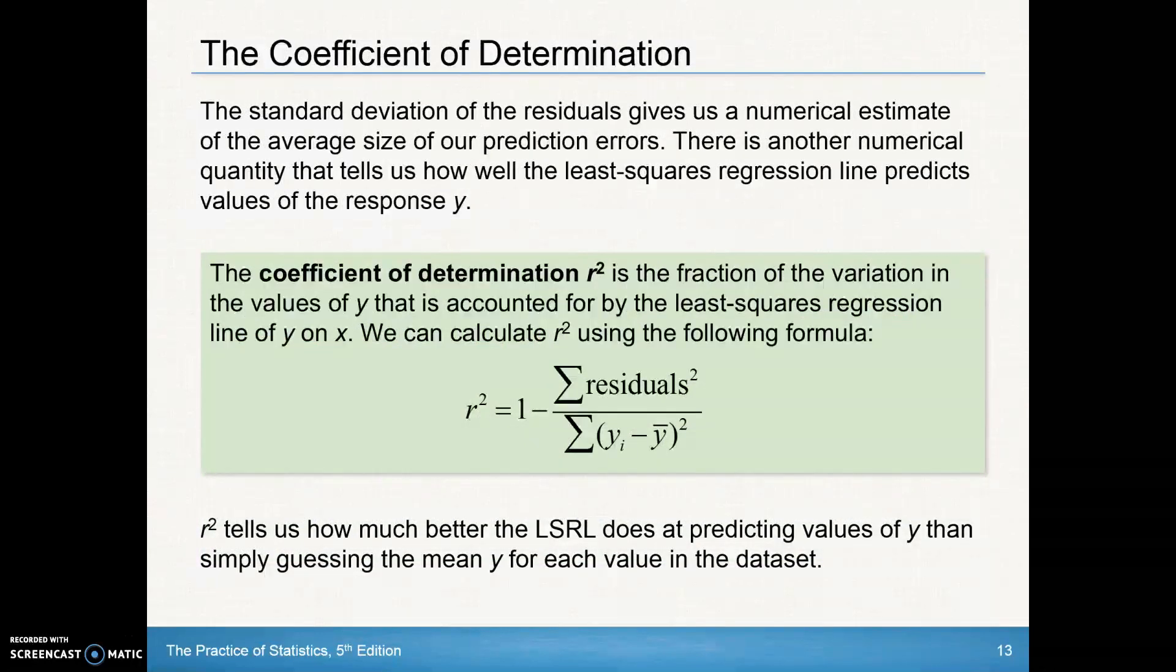We're also going to look at what's called the coefficient of determination. It's related to the correlation coefficient, r-value. The standard deviation of the residuals gives us a numerical estimate of the average size of our prediction errors.